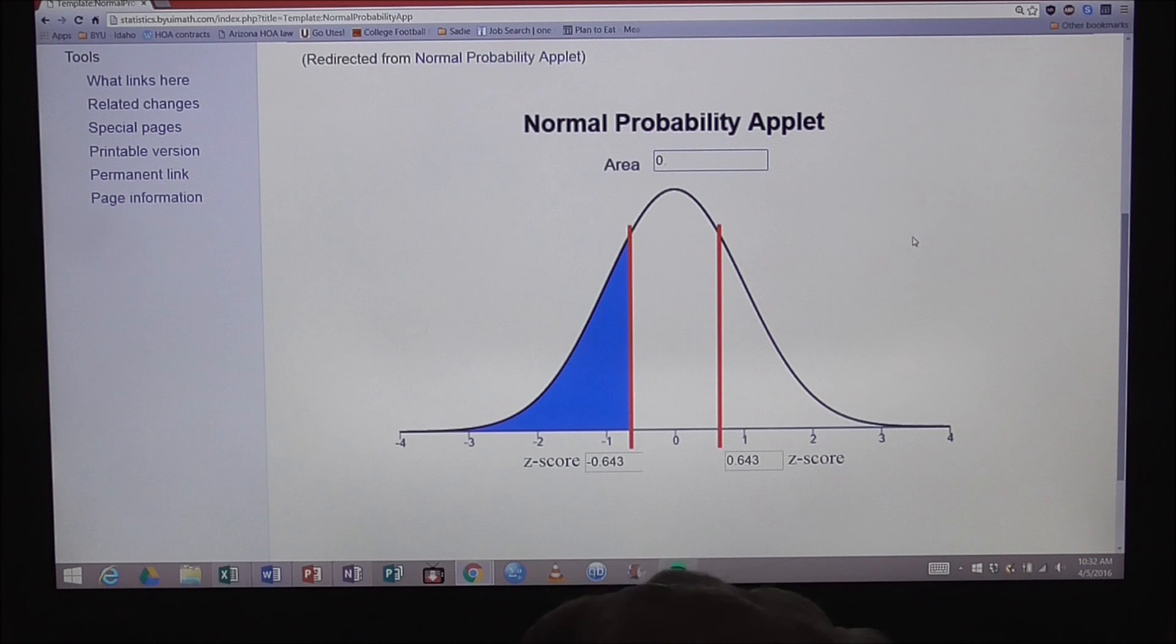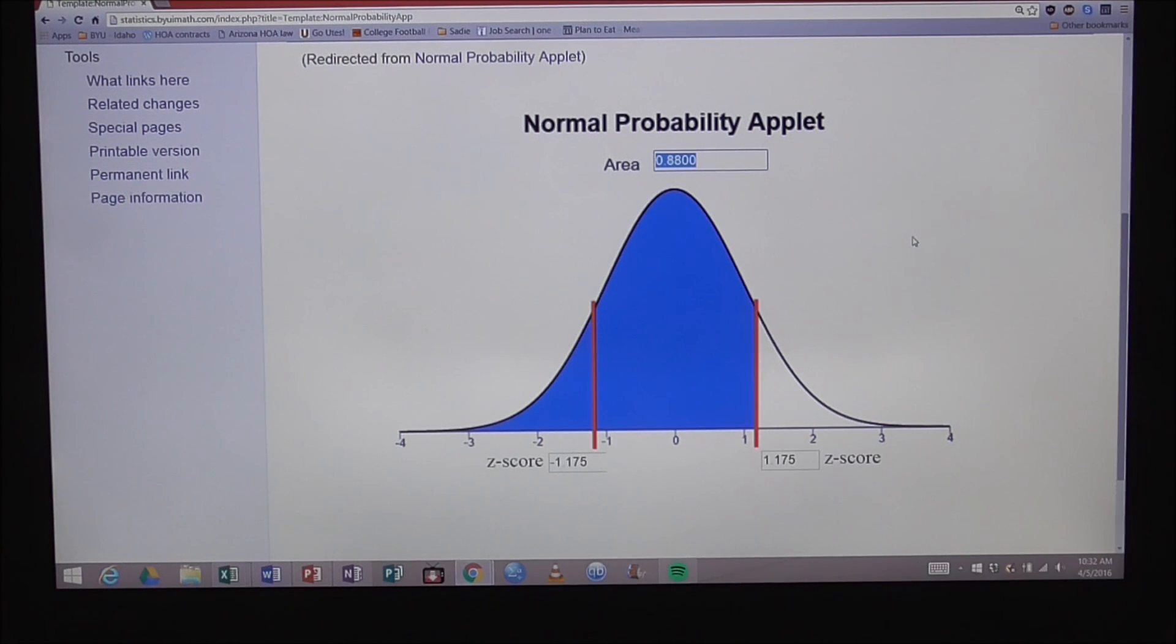you'll notice after I hit enter, it automatically highlights the center portion because it knows that if the area is greater than 0.5 or 50 percent, that the area under the curve in blue is going to have to include the center portion also. So now the z-score I'm looking for is this one on the right side, the positive value, because that's the point at which 88 percent of the area under the curve is to the left and 12 percent of the area under the curve is to the right. My z-score for the 88th percentile is 1.175.